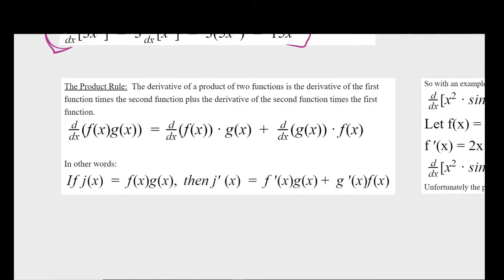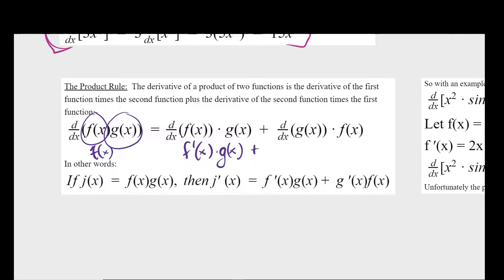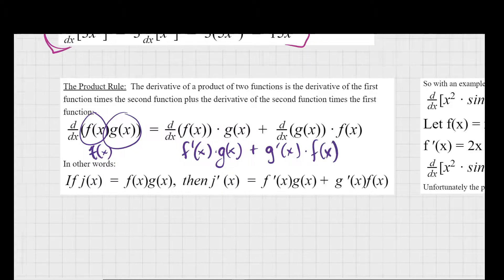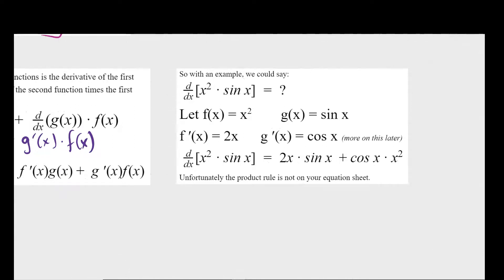Next is the product rule. If you want to take the derivative of two functions multiplied together — f of x and g of x — you take the derivative of the first times the second, plus the derivative of the second times the first. Written another way: f prime of x times g of x, plus g prime of x times f of x. To find the derivative of a product, take the derivative of the first times the second equation.